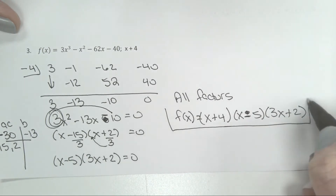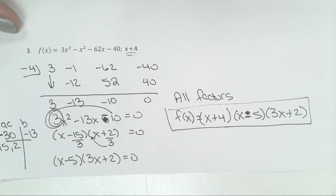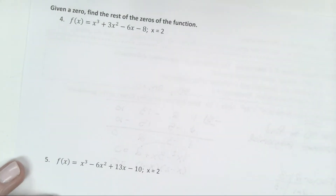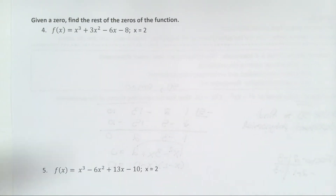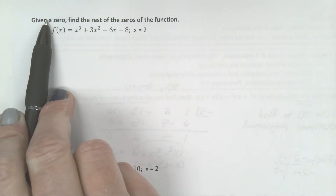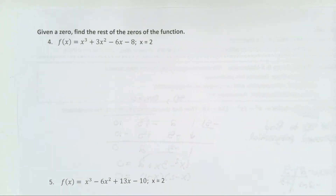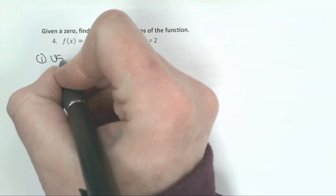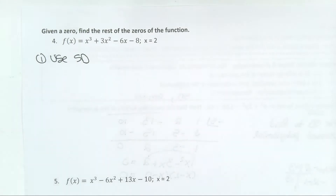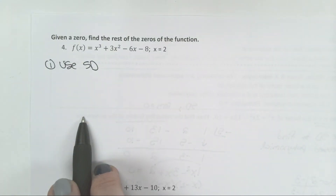So once you know one of your original factors, it's generally pretty easy to run synthetic division and find the others. The back side is really just more of the same, but it's a change in terminology. This says I am given a zero, and I want to find the rest of my zeros or solutions. So I'm going to start off the same — use synthetic division to find my depressed polynomial.